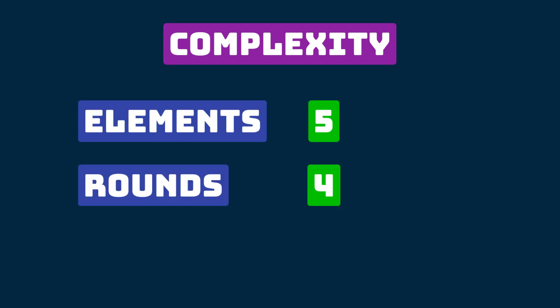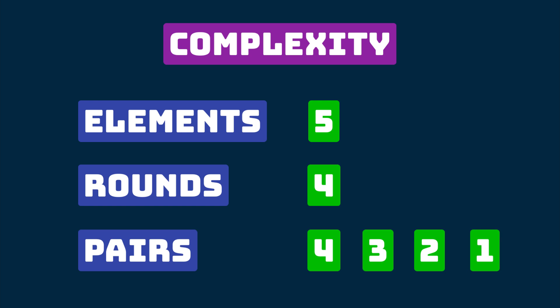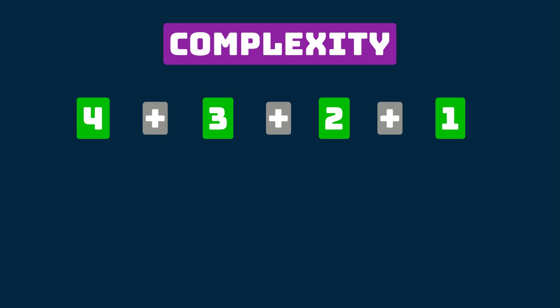For five elements we got four rounds. Four pairs were compared on the first round and just one pair was compared on the last, fourth round. Therefore, in order to find the total quantity of pairs which were compared, we have to sum up numbers starting from four to one, which gives us ten for our example with five elements.